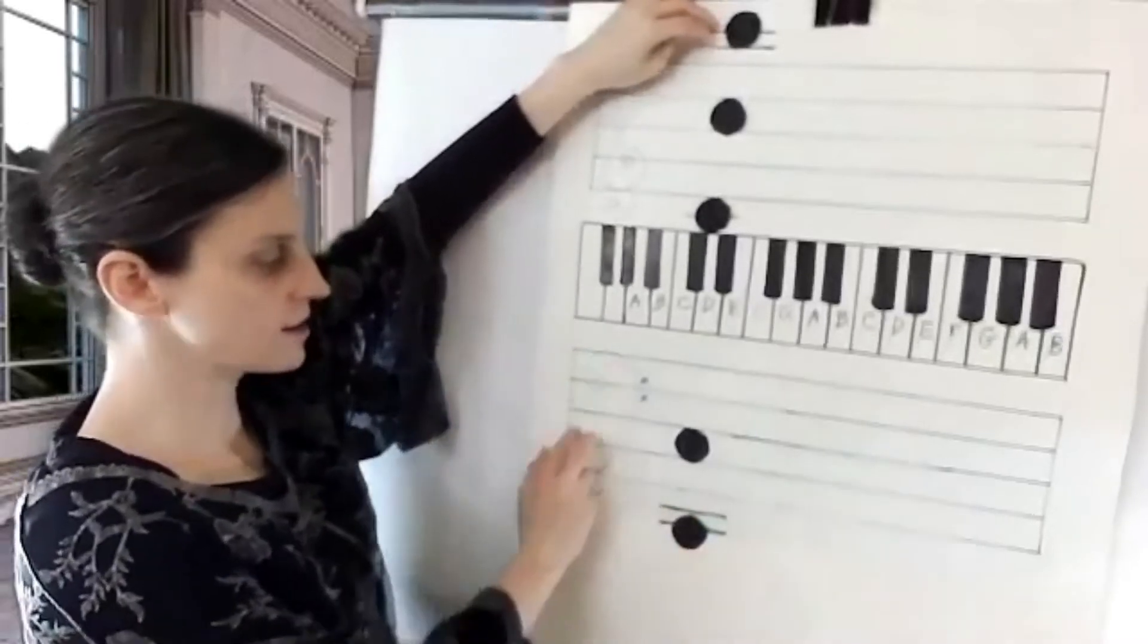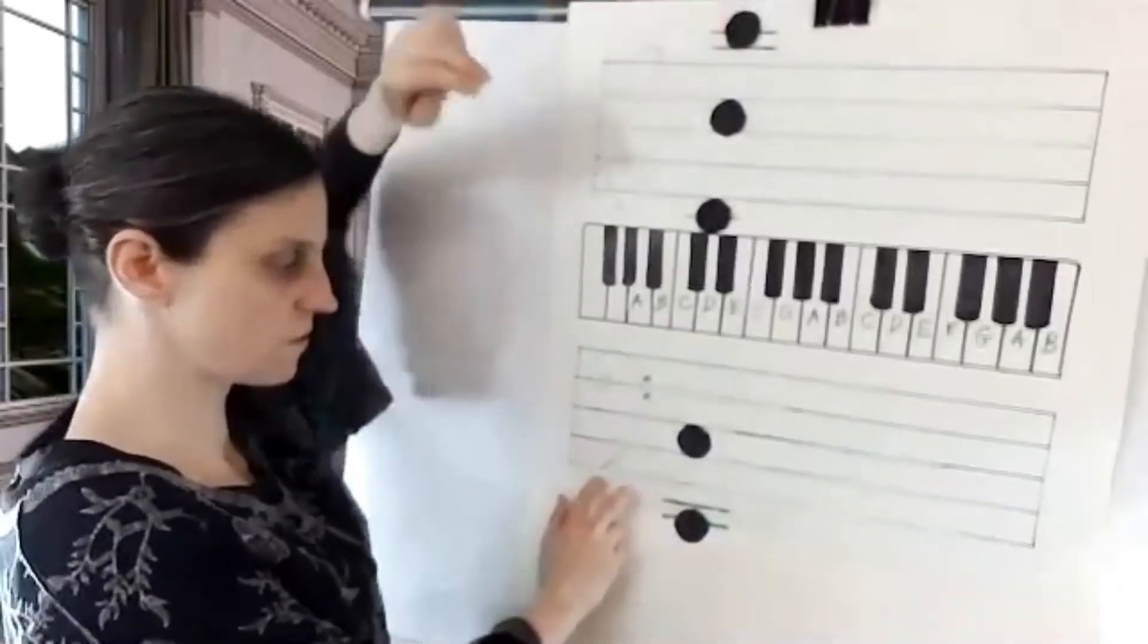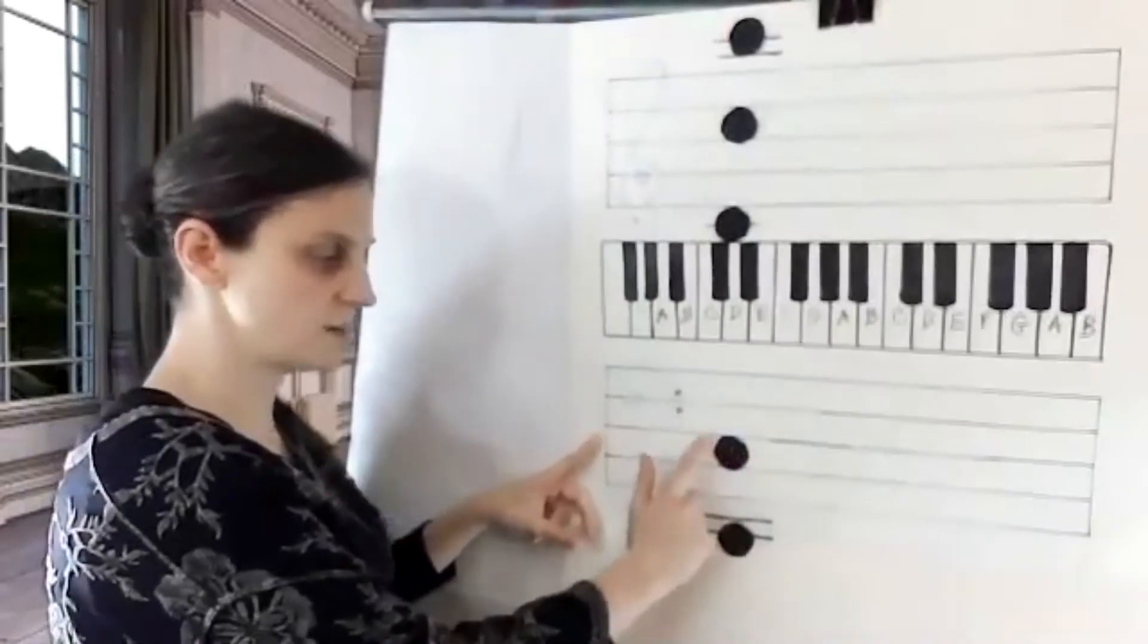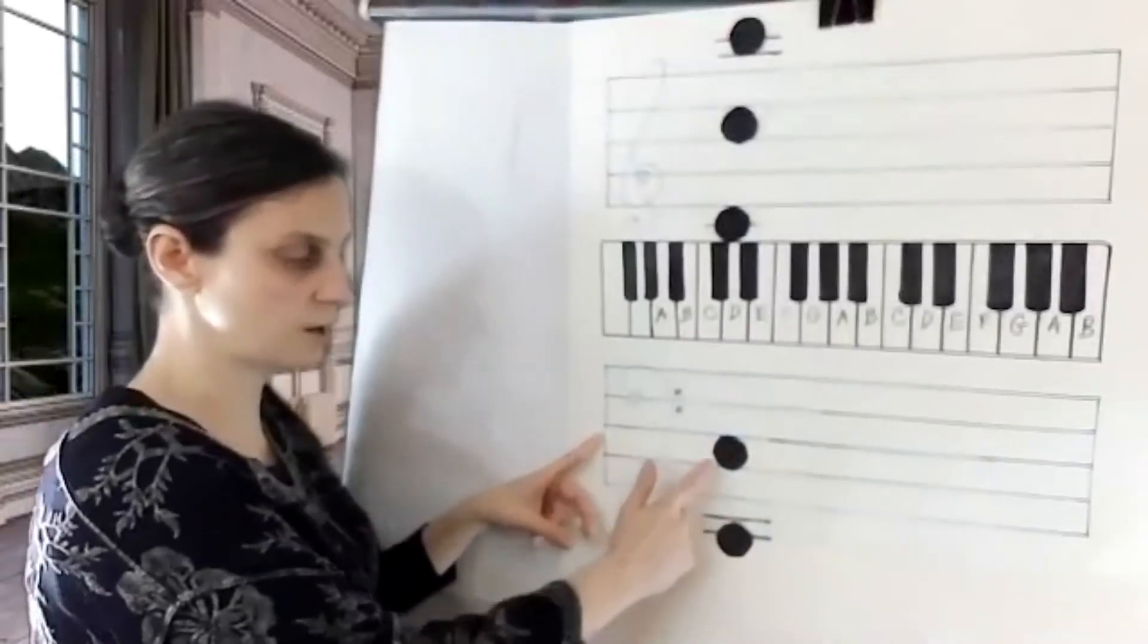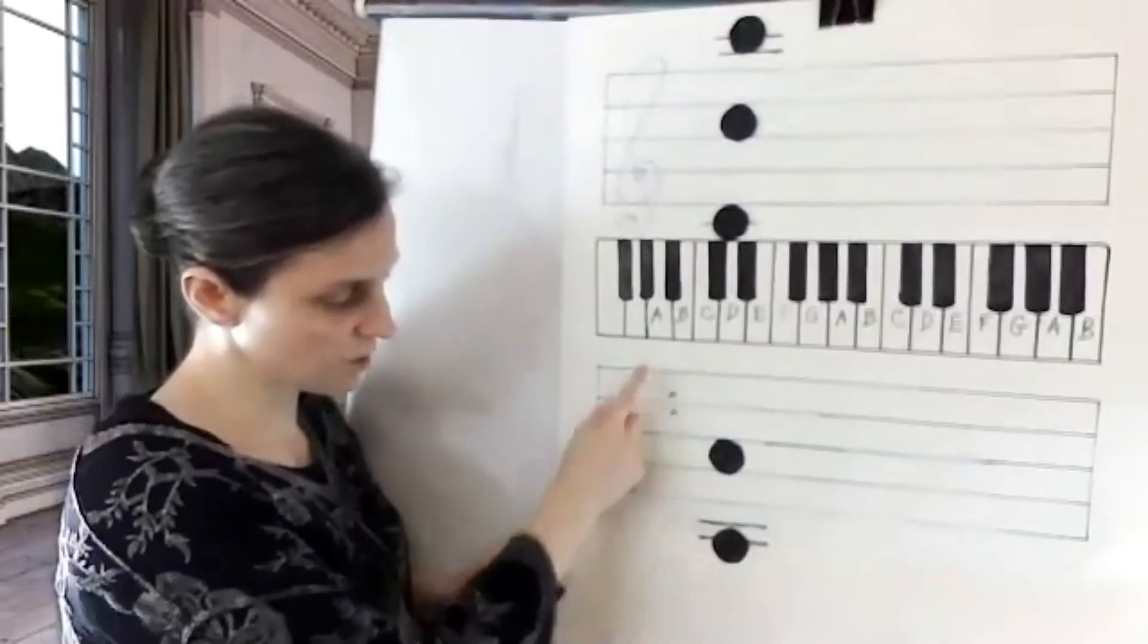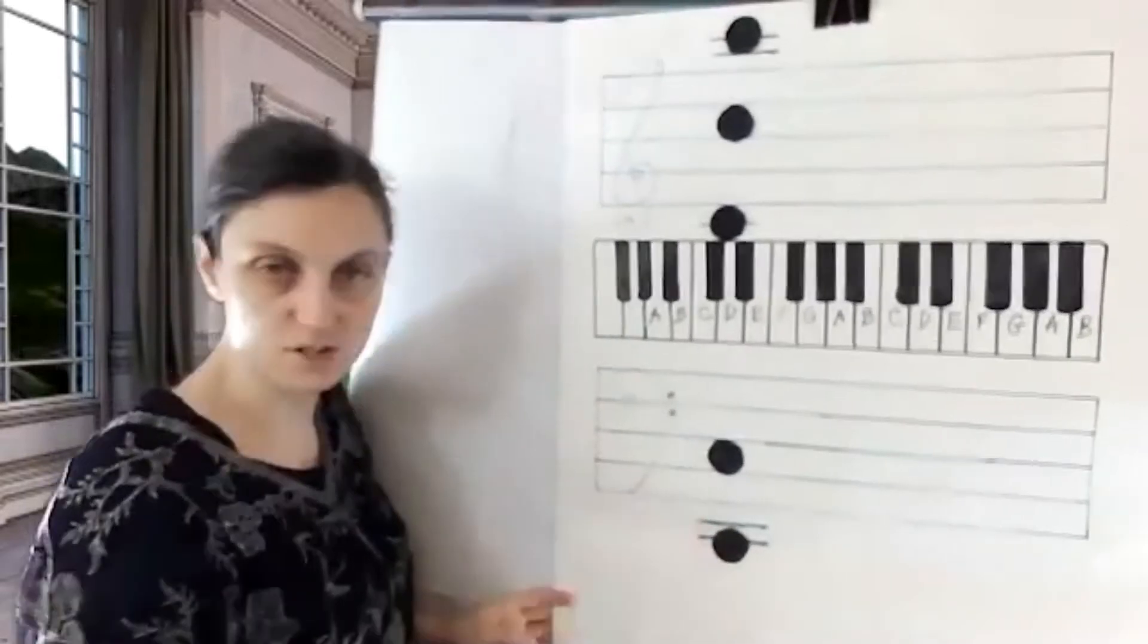Now, if you take a look at the bass staff, you've got second space to the bottom is C. Two ledger lines below the bass staff is low C.